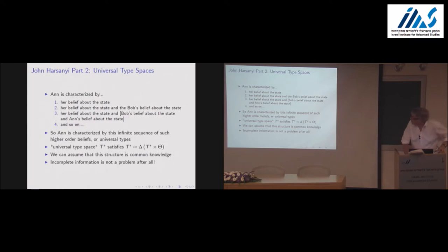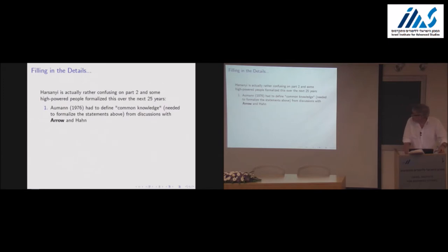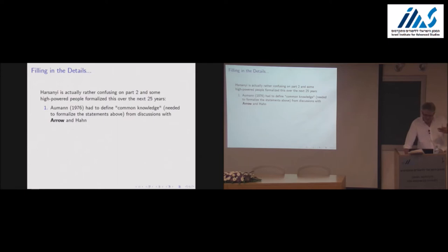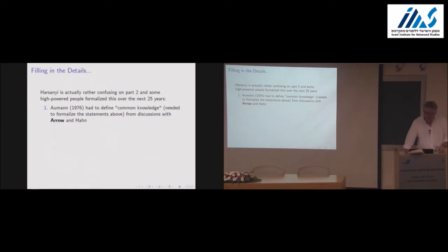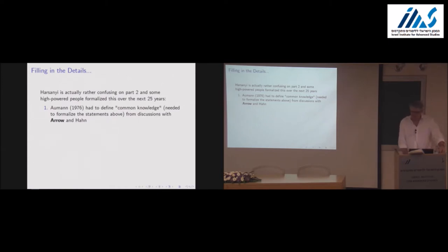This construction of the universal type space was eventually formalized more precisely over the next 25 years. Harsanyi kind of suggested this point but didn't completely get to the end of that story. To make this precise, we need a formal notion of common knowledge, which Bob Aumann provided — and incidentally, he reminded me that the paper notes this arose out of discussions with Arrow and Hahn. You can't really get away from Arrow.